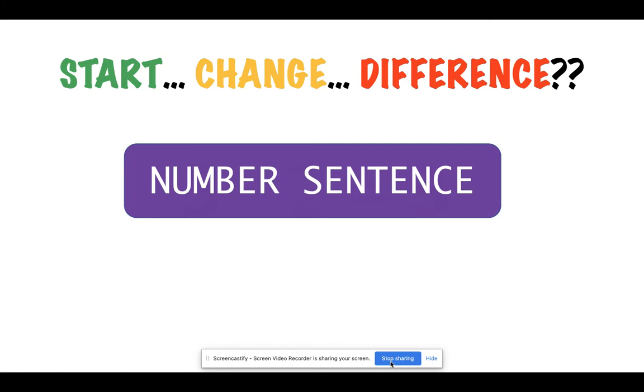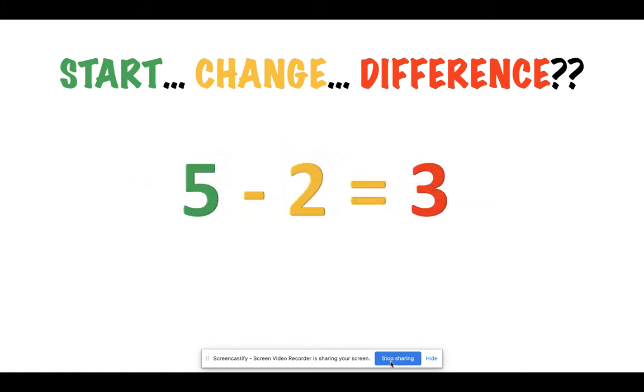Let's take a look at this number sentence. This number sentence says 5 minus 2 equals 3. Five is my start. The minus sign is showing that I need to subtract, it means I need to take away. So I am taking away 2. That is my change. And then my difference is 3, because when we take 2 away from 5, we are left with 3.